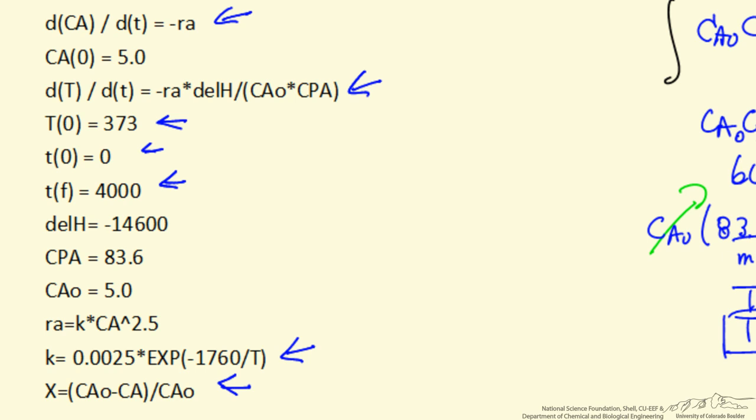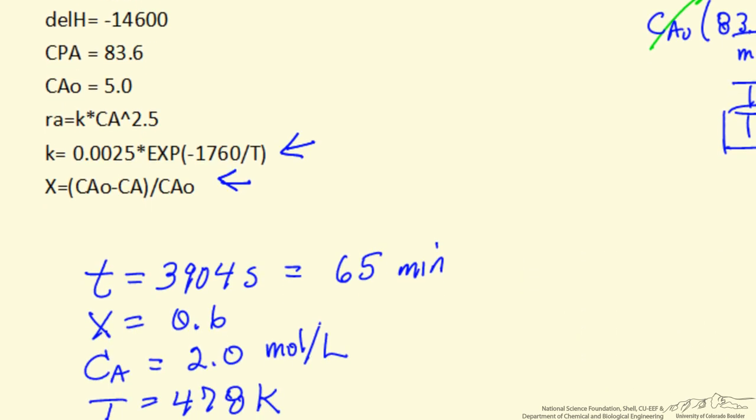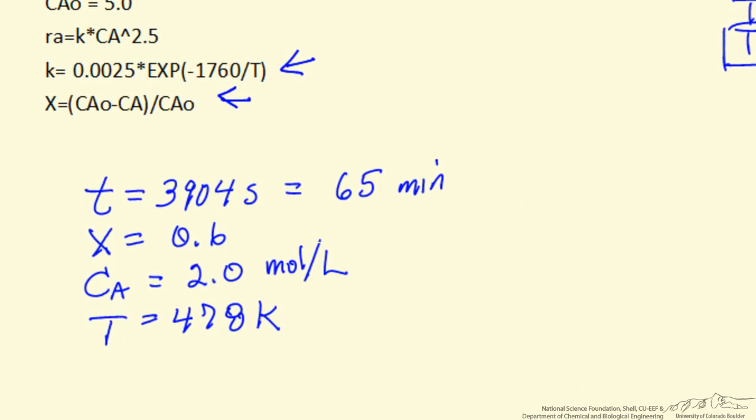Because it's a constant volume reaction, we can do this, and what we find is that the time is 3904 seconds, or about 65 minutes, to reach a conversion of 60%, which corresponds then to a concentration of 2 moles per liter, and a temperature of 478 as we also determined.